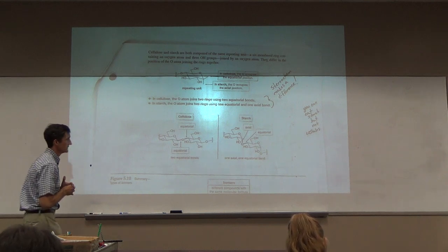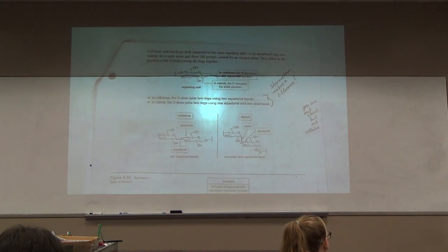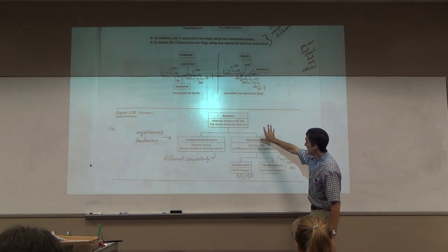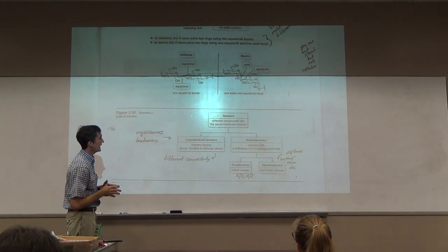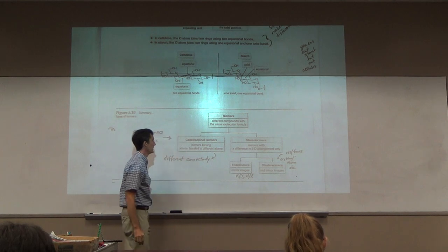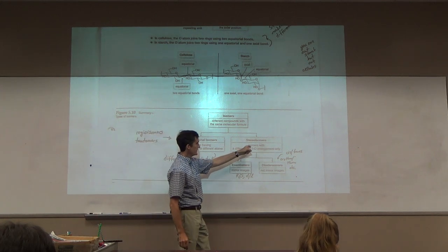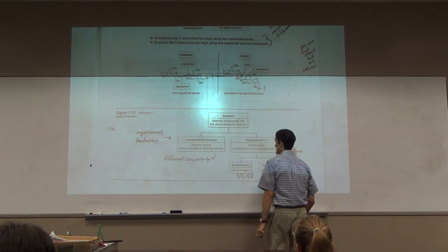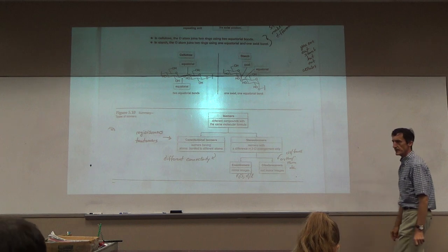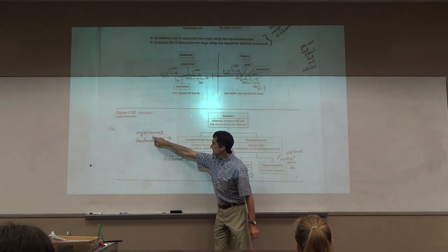If we could eat cellulose we could just eat trees and there would be no food shortage. This is going to be very important as we move along. Here's a flowchart of isomers: two different types mainly - constitutional and stereo. Constitutional isomers have different connectivity and thus different names. Stereoisomers have the same exact name because they have the same connectivity. Two different types of stereoisomers: enantiomers and diastereomers. Enantiomers are mirror images; diastereomers are not.